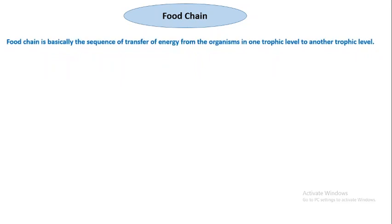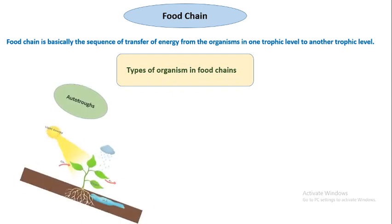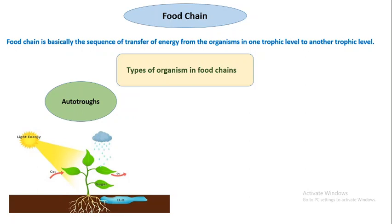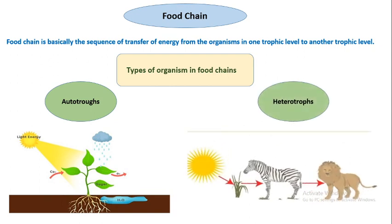The food chain is basically the sequence of transfer of energy from organisms at one trophic level to another trophic level. Types of organisms in food chains: autotrophs — these plants use sun energy and fix carbon dioxide from the atmosphere and water from the soil, synthesizing sugar, while oxygen is returned to the atmosphere. Heterotrophs are organisms which cannot synthesize their own food; they graze on plants, and one organism eats plants and is in turn eaten by another organism — this is the food chain and how energy flow occurs through it.